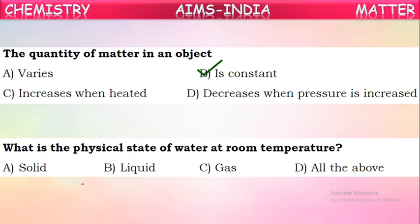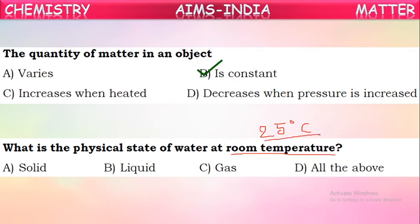Question 3: What is the physical state of water at room temperature? Room temperature is commonly taken as 25 degrees Celsius. Below 0 degrees Celsius, water exists as ice (solid). Between 0 and 100 degrees Celsius, water exists as liquid. Above 100 degrees Celsius, water exists as water vapor or steam. At 25 degrees Celsius, water exists in the liquid state.